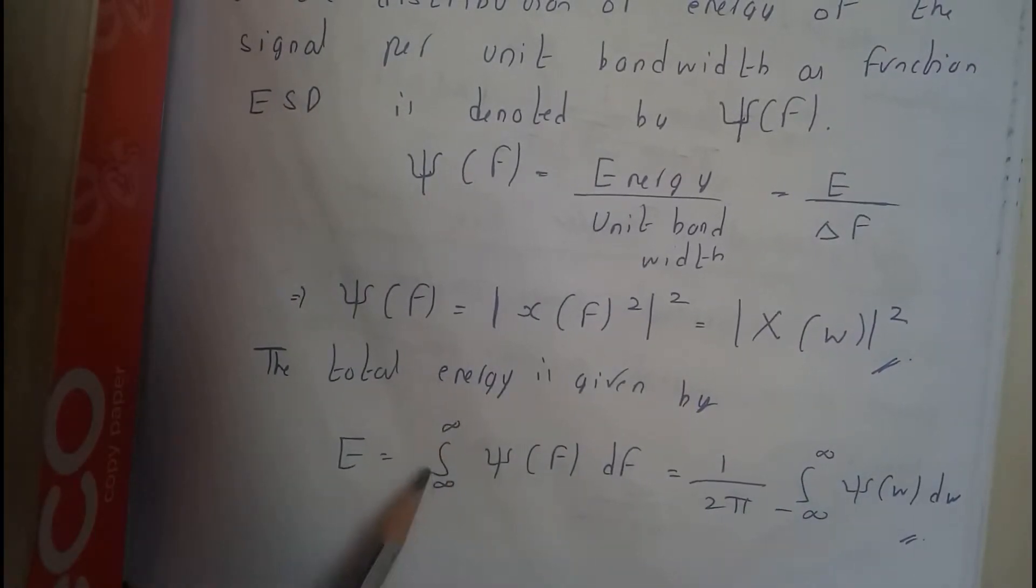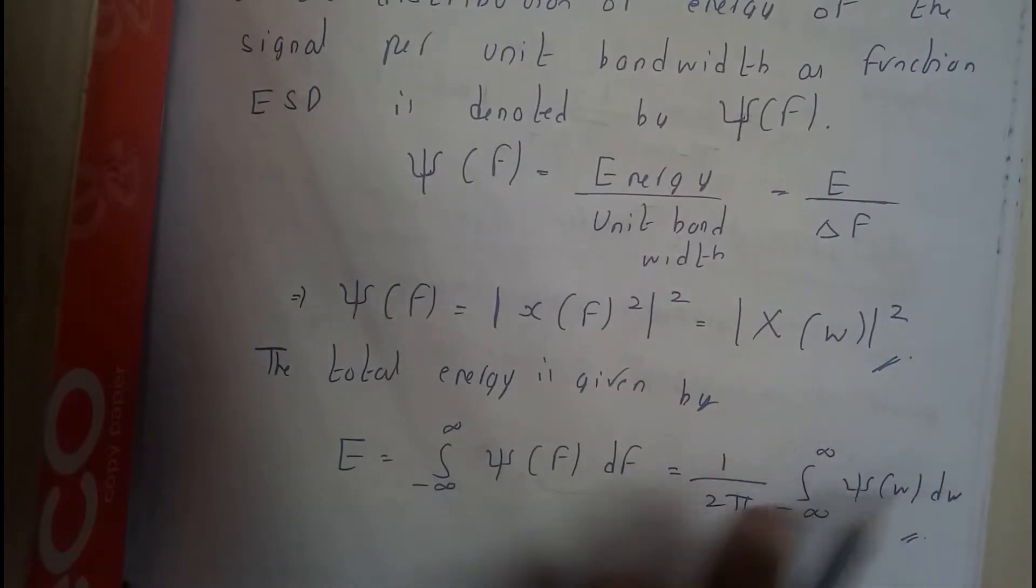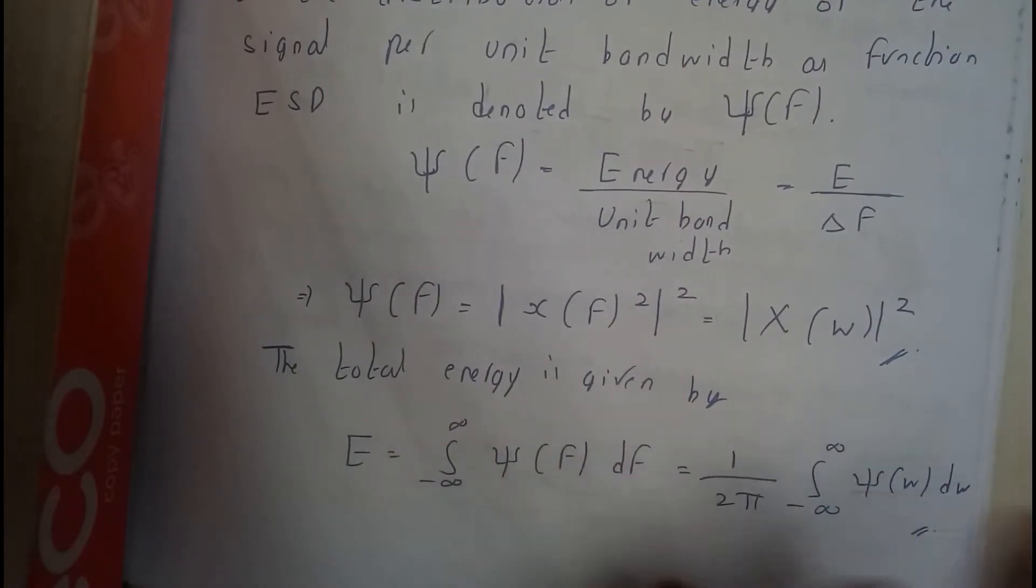So where E is nothing but integral minus infinity to infinity psi of X into dF, which is equal to one by two pi integral minus infinity to infinity psi of omega d omega. So if it may be in terms of F, it may be in terms of omega. This will be the total energy in energy spectral density.